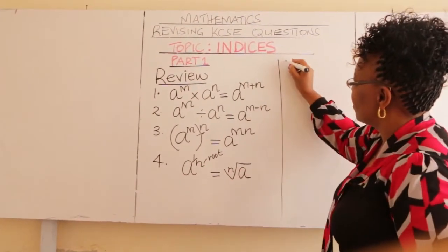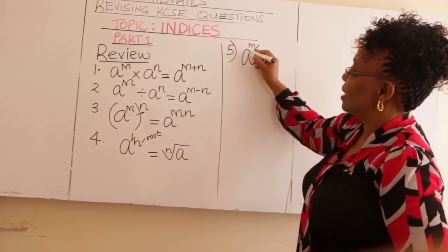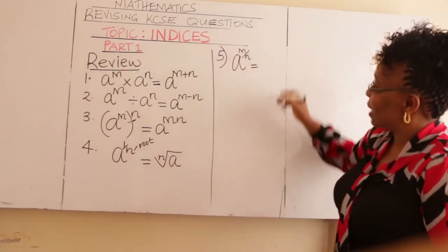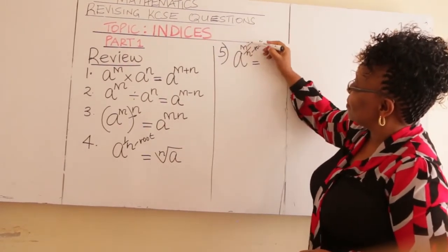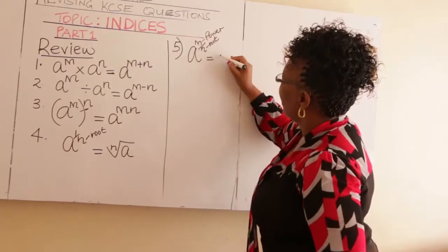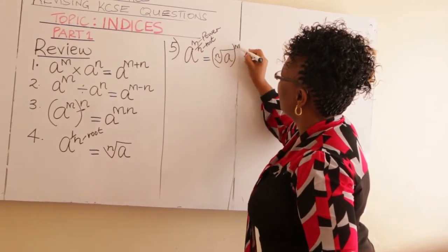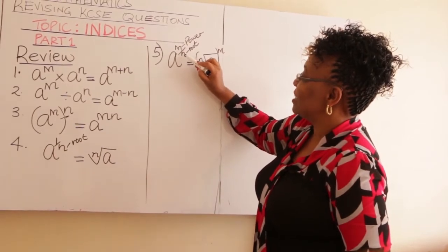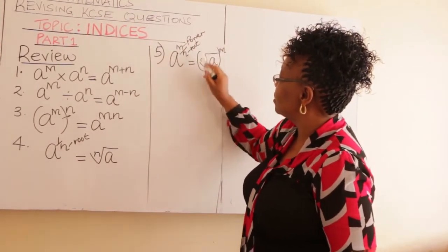Number five: if you have A raised to M divided by N, this is the same as — take the denominator as a root, just like before, and the numerator as a power — and therefore you get N root of A raised to M. The denominator is the root, the numerator is the power, giving N root of A raised to power M.